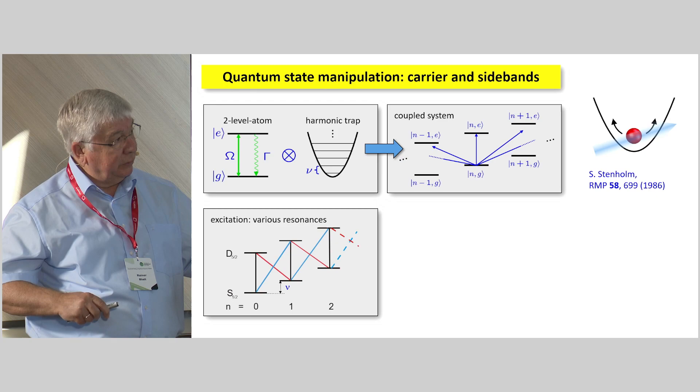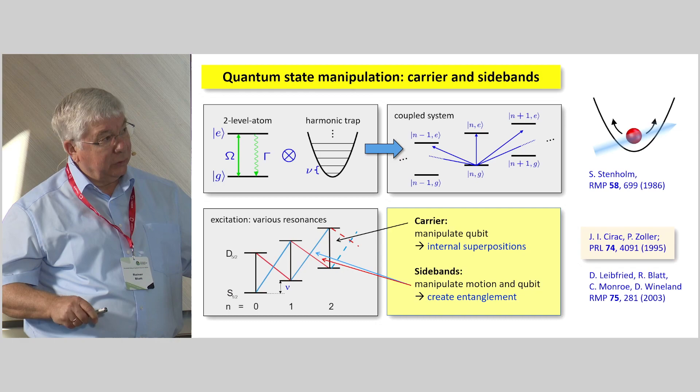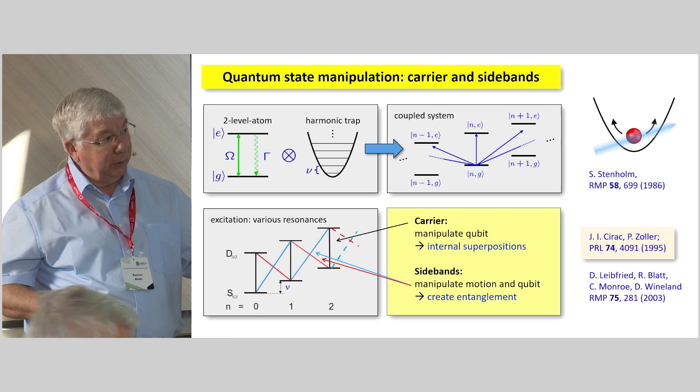So, in summary, the carrier allows us to manipulate the qubit, that's for the internal superpositions, and the sidebands allow us to manipulate the motion and the qubit, that is, we create spin motion entanglement.